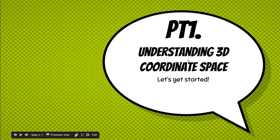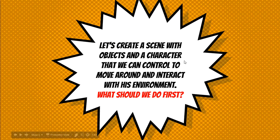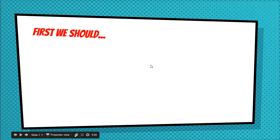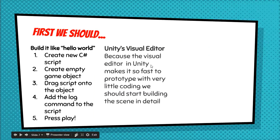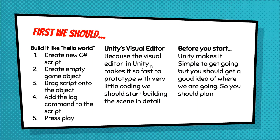The first thing we have to do is understand 3D coordinate space, because many of you have not done anything in 3D before. We're going to create a scene that has a player, and we're going to use our keyboard and mouse to control them. Should we build it like Hello World, work with Unity's visual editor, or make a plan? Pick one.